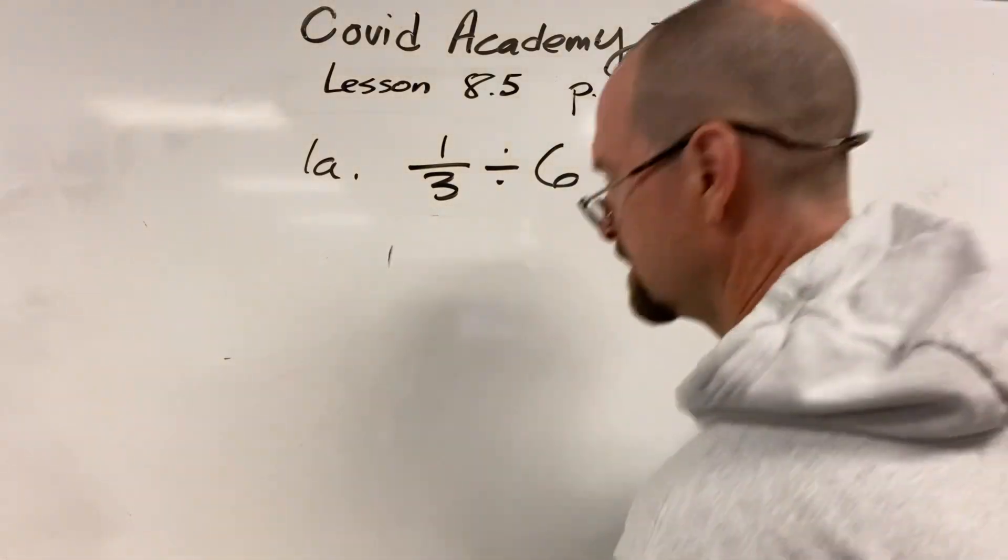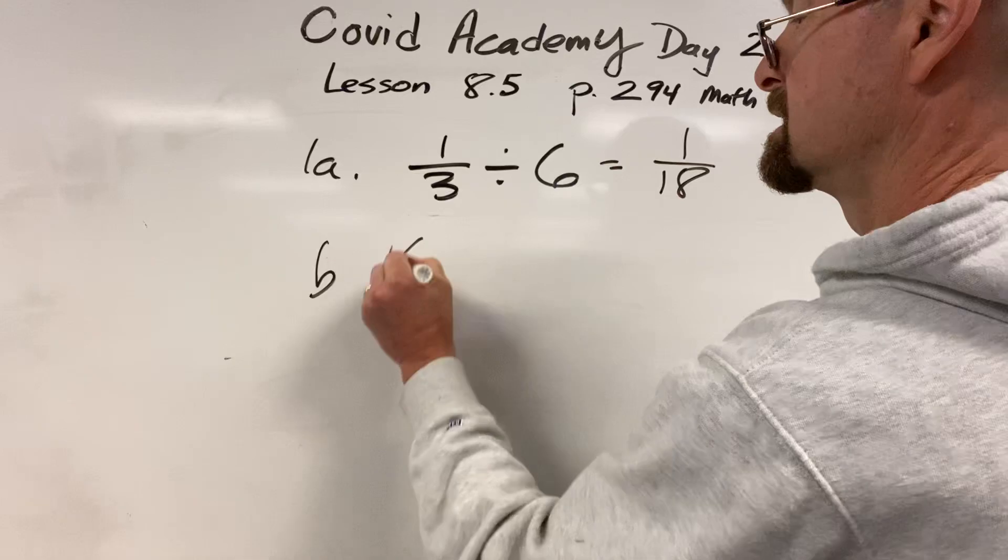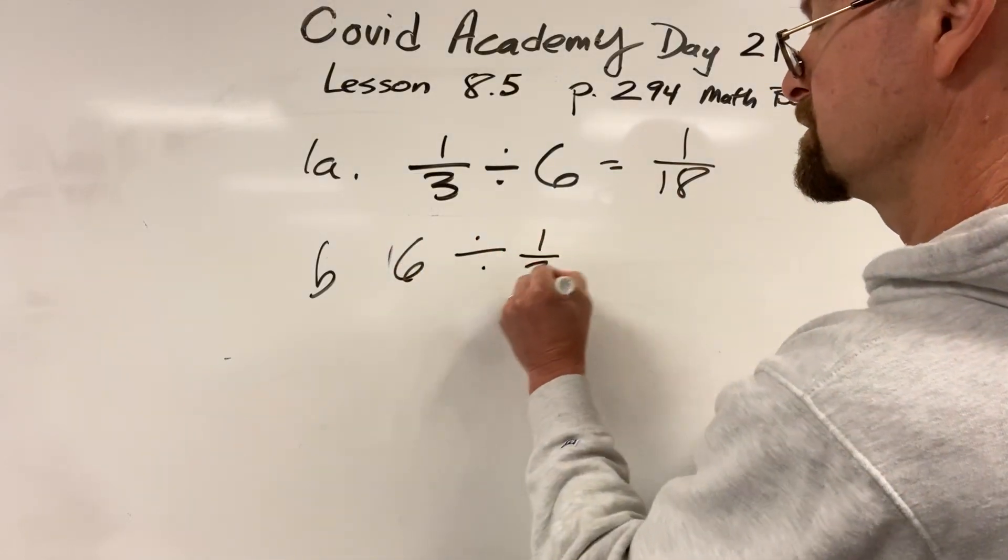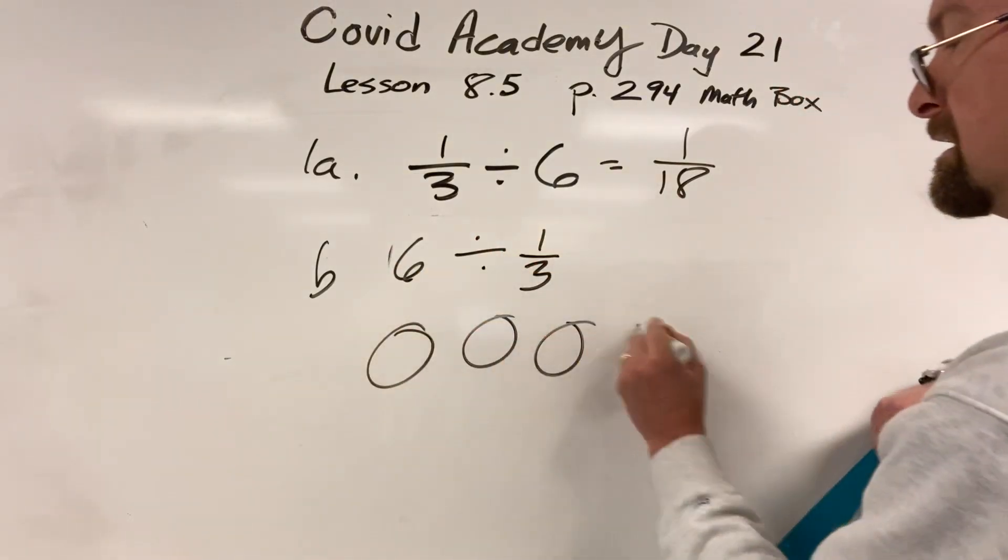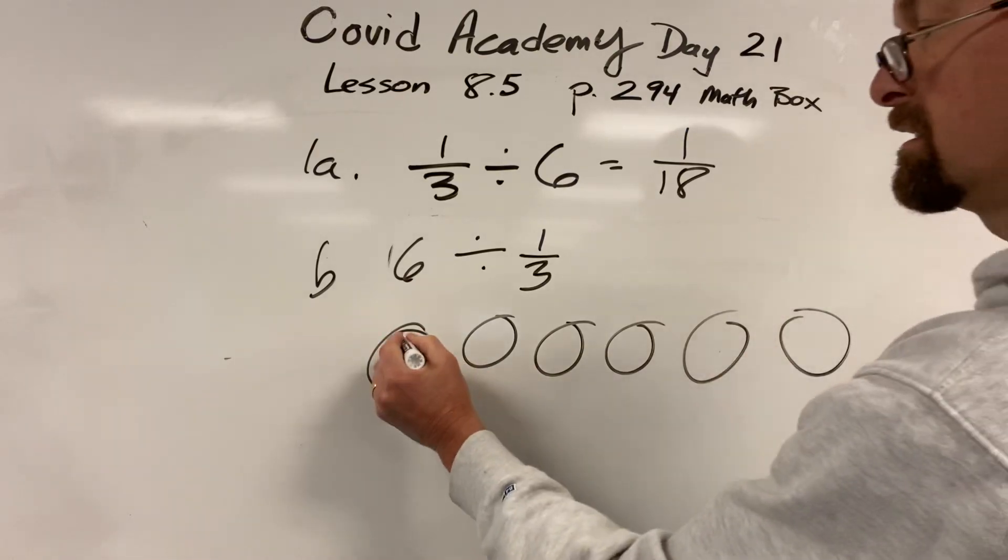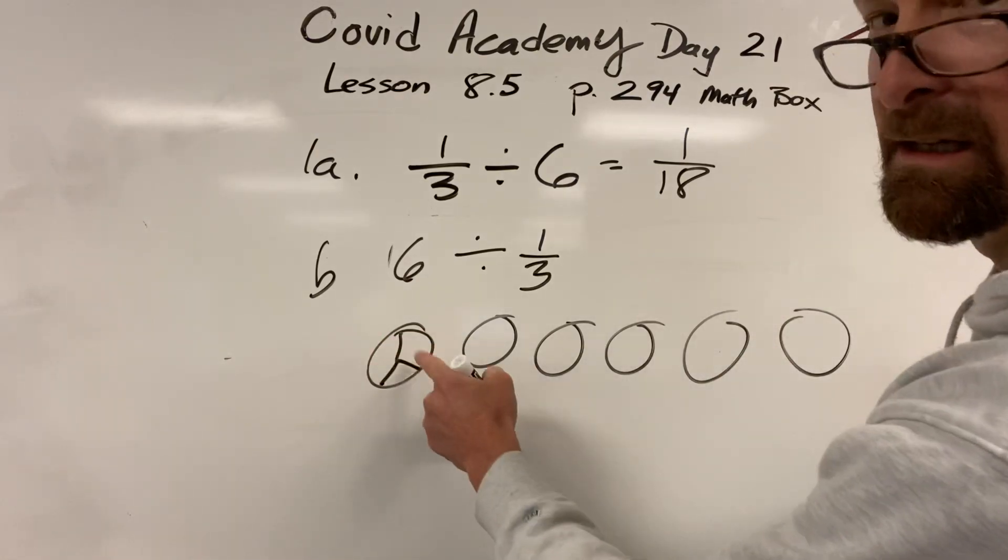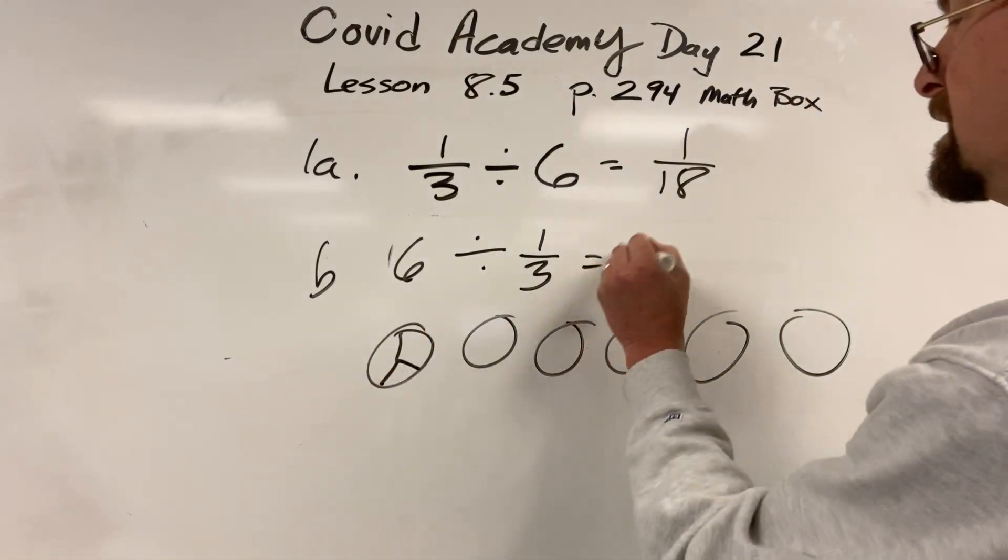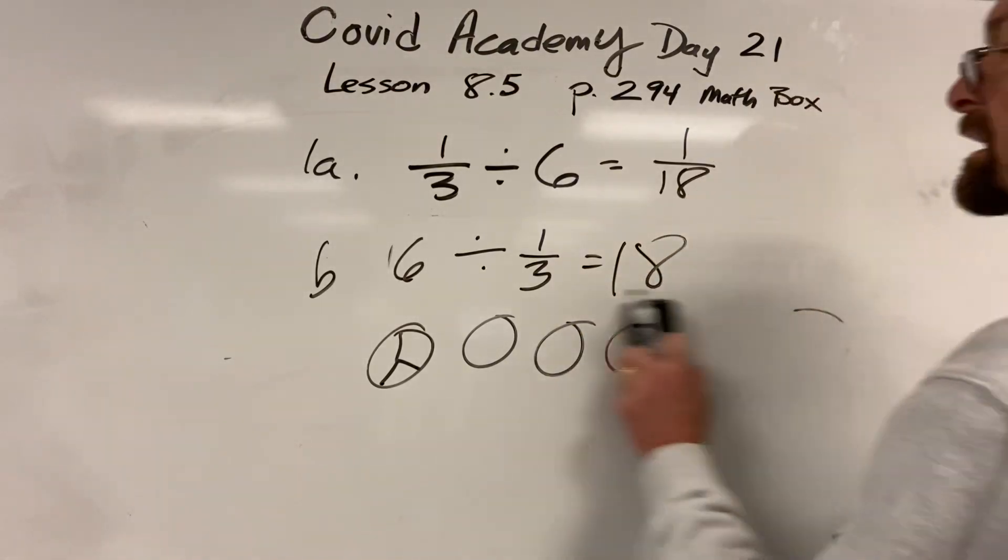Now if I take 6 for B, 6, and I divide it up into thirds, it means I'm taking 6, and I'm saying how many thirds are there in this whole thing? Well, there's 3 in each one, so it's 6 times 3. That's 18. Okay, you got the number one done. All right, you corrected it.